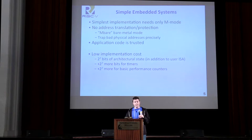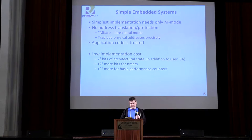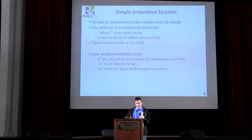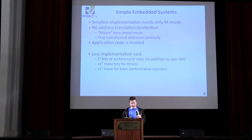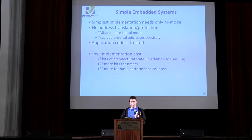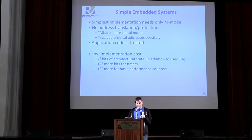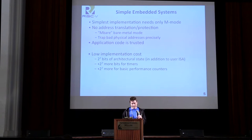A simple embedded system might only have machine mode. In this mode there is no memory protection, no address translation — virtual addresses equal physical addresses — and application code can basically do whatever it wants. So inherently the application code has to be trusted in this kind of system. Even though there is no memory translation, we recommend that implementations still trap bad physical addresses precisely at the core, because that makes debugging substantially simpler and it's also pretty cheap to do.